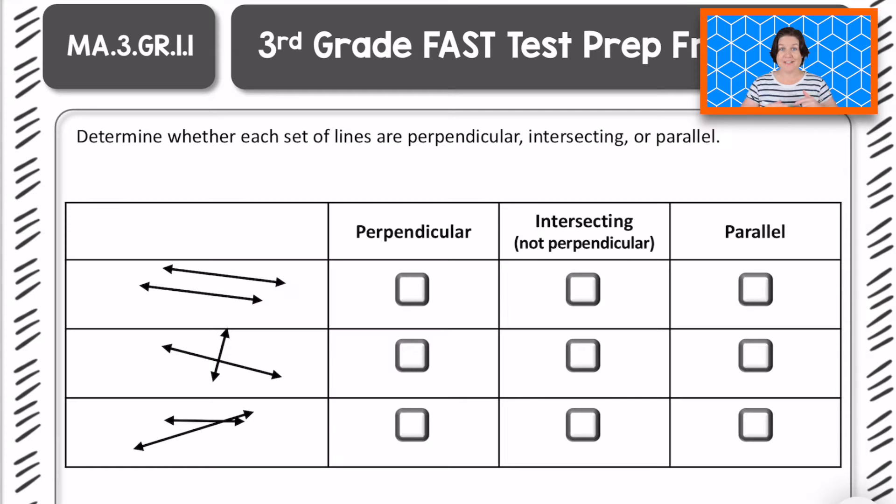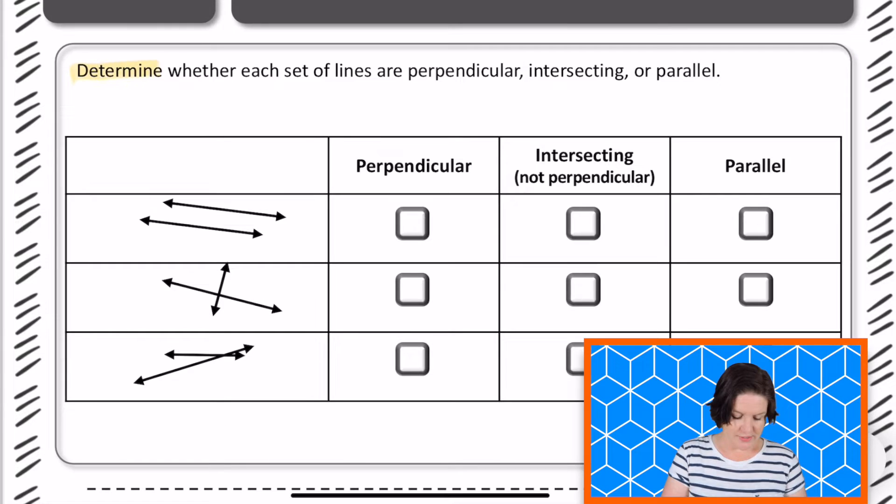Welcome back there, third grade. Let's go over this problem. So it says determine whether each set of lines are perpendicular, intersecting, or parallel. So let's go over those three different terms.